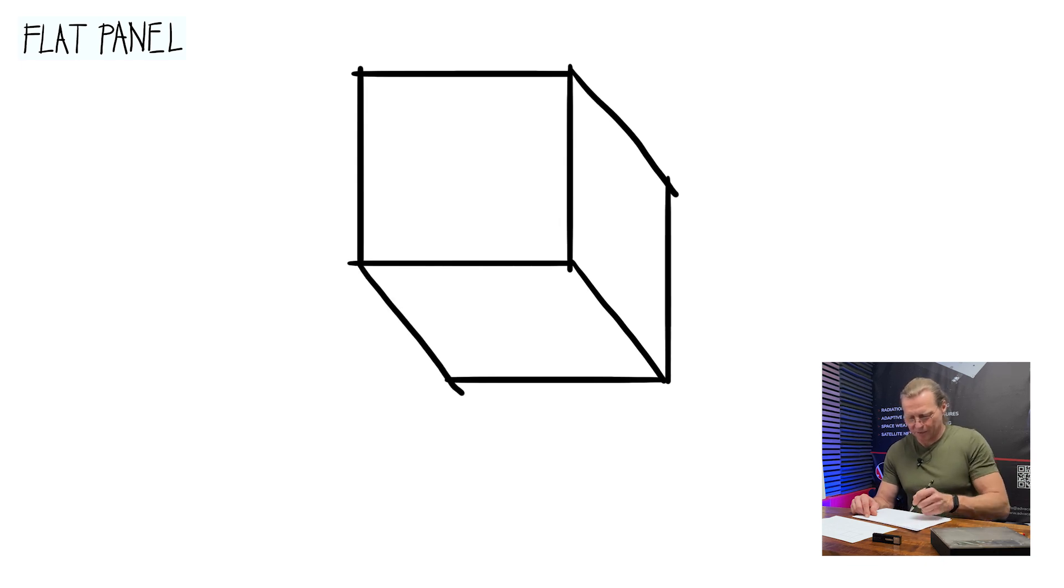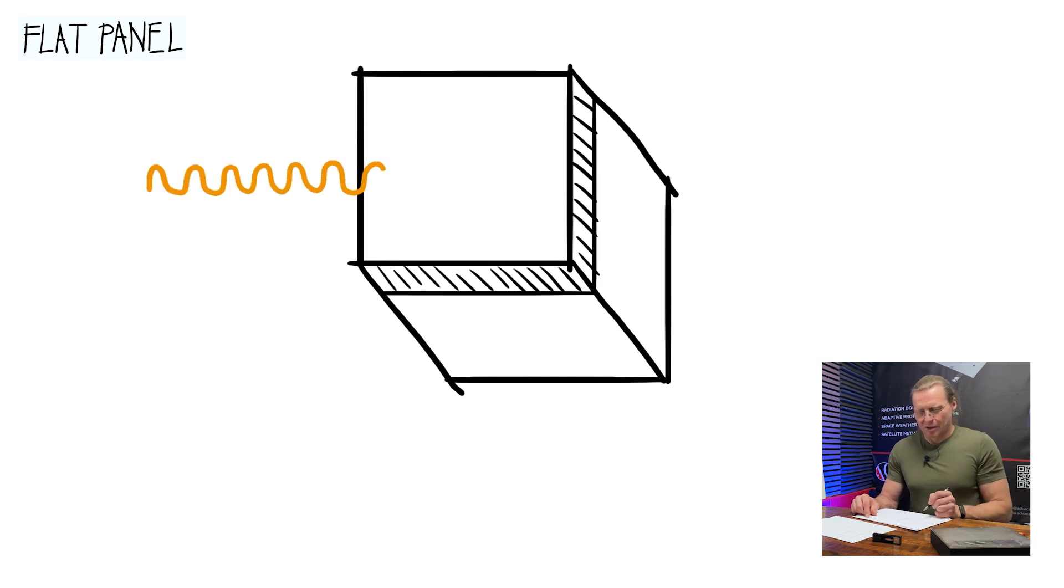And the first part of that block would be made of scintillating material, which is basically material which converts incoming x-ray photon to visible light. So whenever x-ray photon comes here to that pixel, it would start to glow. So it produces visible light.